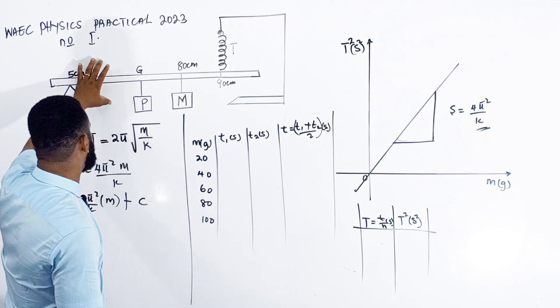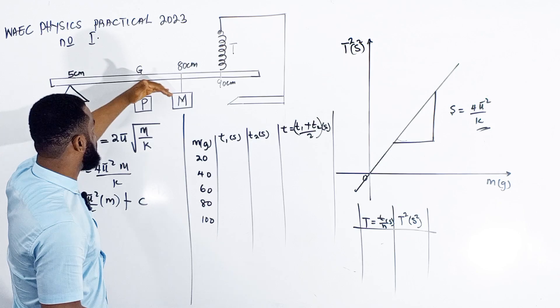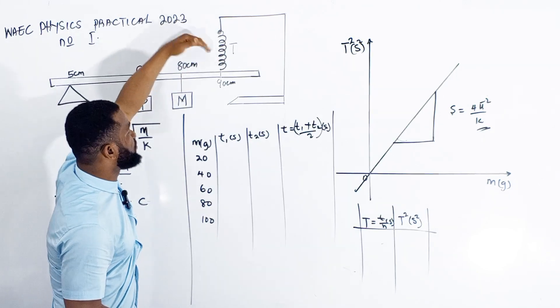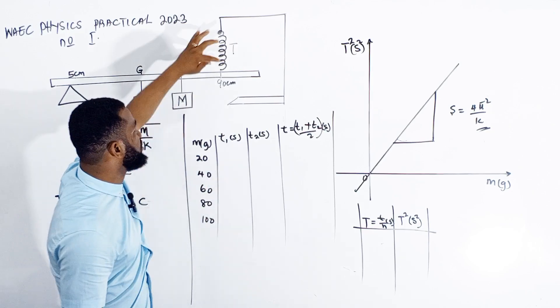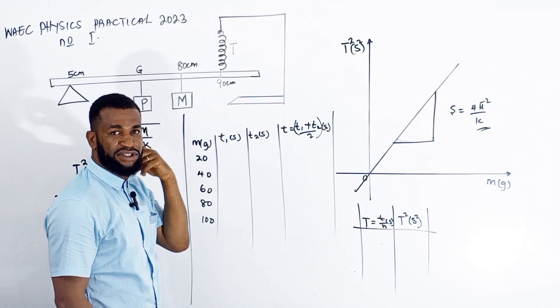Also, remember that the total downward forces must equal upward forces. That's why I put this T, which is the tension force acting through the helical spring.